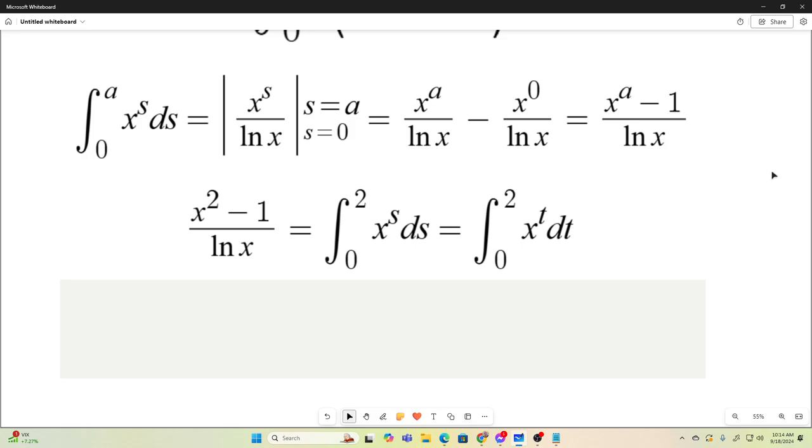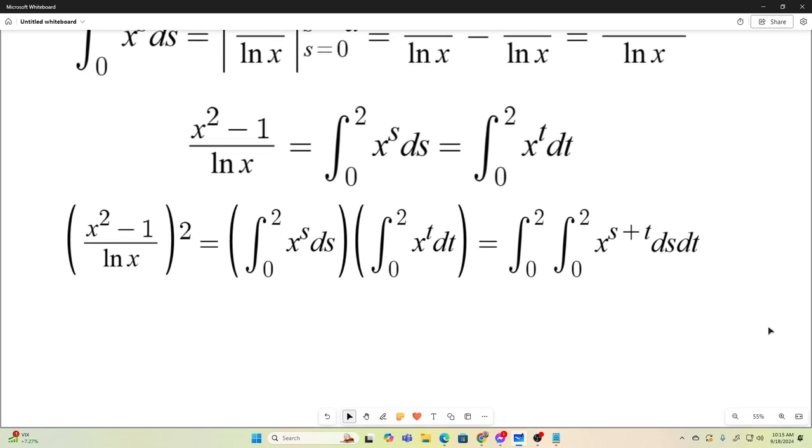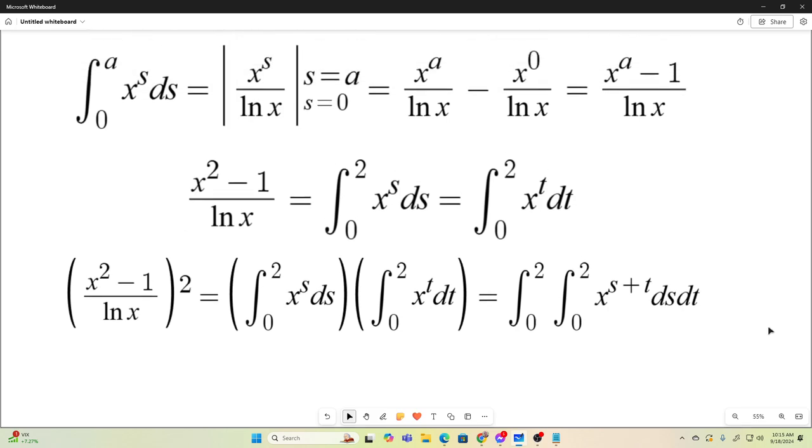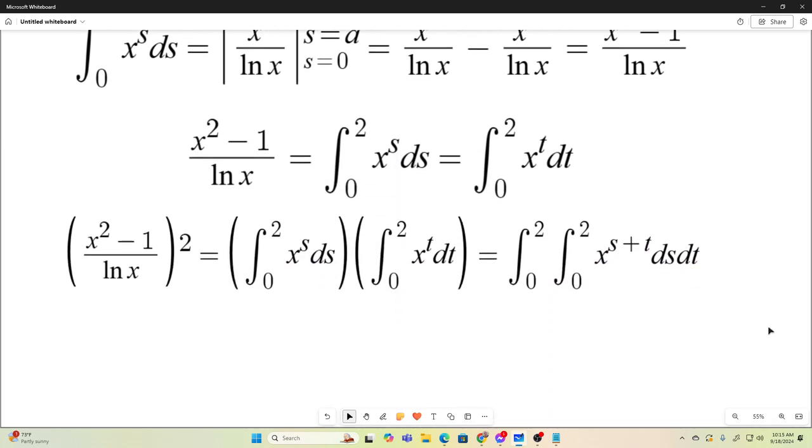So we can express x squared minus 1 over natural log x squared as the product of those two integrals, which we can bring together as a double integral. All right, so now we can replace that x squared minus 1 over natural log x all squared in our original integral with this double integral, giving us a triple integral.